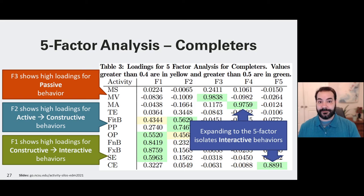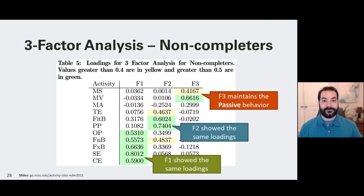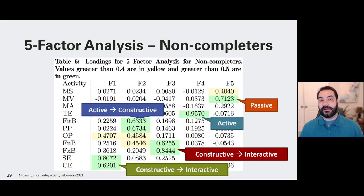Our next step was to then look at the non-completers. In particular, we used the same three and five factors for these as well. And coincidentally, you notice that the F1, F2, and F3 scores are still showing the constructive to interactives, the active to constructives, and the passive behaviors, even though we're now dealing with non-completing students. When we expand this to the five-factor analysis, we're still maintaining these constructive to interactives, active to constructives. But we do start to see some slight differences when we get into three to five factors, namely because a non-completer did not complete the module assessment. And so, as a result, they would not have a high loading for that.